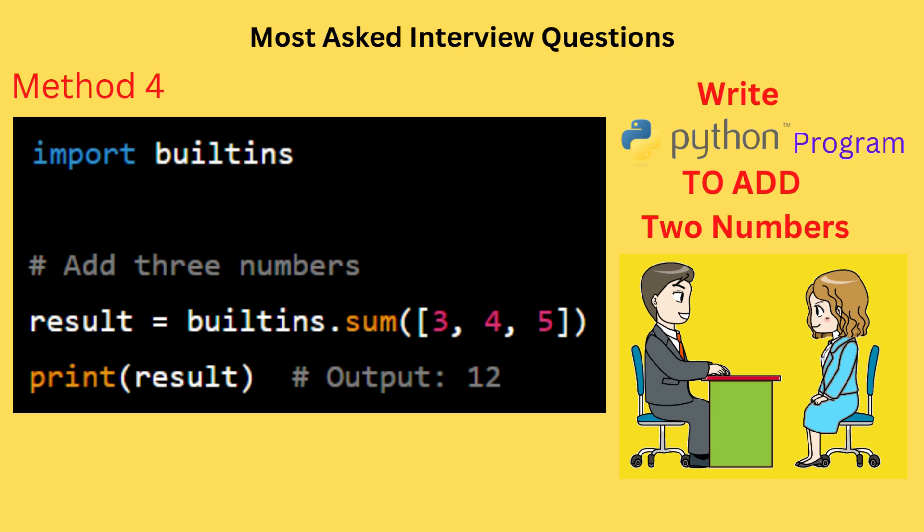This code imports the sum function from the builtins module and uses it to add the numbers 3, 4, and 5. The result is stored in the variable result and printed to the console.